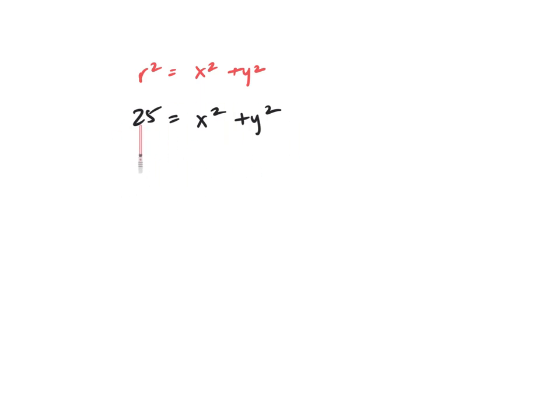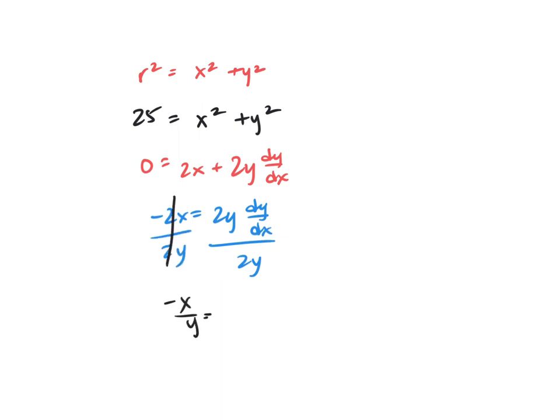Could we go find the derivative of this with respect to x? Let's do it. What's the derivative of 25? Nothing, right? Derivative of x squared is 2x. Derivative of y squared with respect to x is 2y dy/dx. Let's just go get my slope.